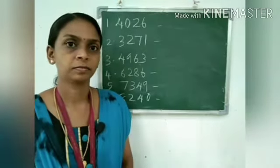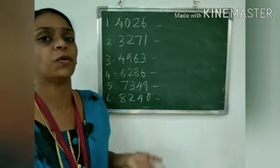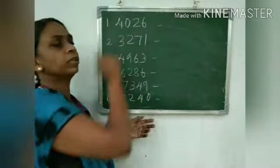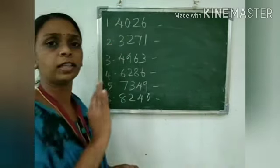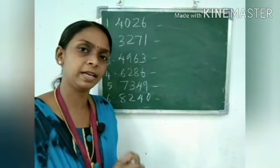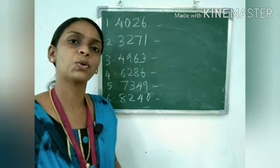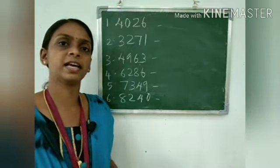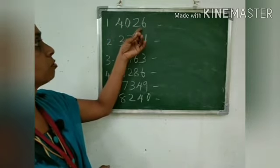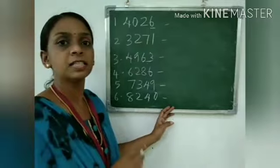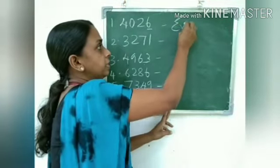Now we will look at some examples of how to identify whether a four-digit number is odd or even. We look at the ones place: if it is 1, 3, 5, 7, or 9 it is odd; if it is 0, 2, 4, 6, or 8 it is even. First example: 4026. The ones place digit is 6, so 4026 is an even number.